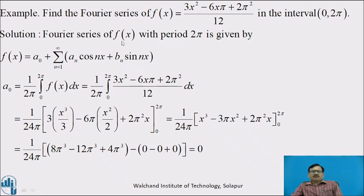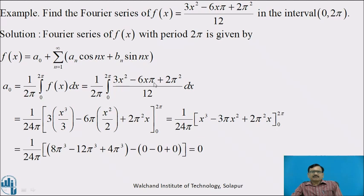The Fourier series of f(x) with period 2π is given by f(x) = a₀ + Σ(n=1 to ∞)(aₙcos nx + bₙsin nx). Here we have to calculate a₀, aₙ, and bₙ. a₀ = (1/2π)∫₀²π f(x) dx = (1/2π)∫₀²π (3x² − 6xπ + 2π²) / 12 dx. Taking 12 outside, this becomes (1/24π)∫₀²π (3x² − 6xπ + 2π²) dx. Integrating: 3·(x³/3) − 6π·(x²/2) + 2π²·x with limits 0 to 2π.